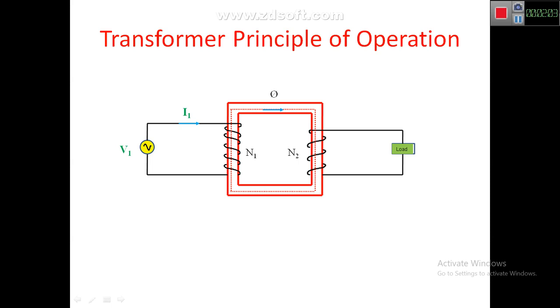That EMF is E1 is equal to minus N1 d phi by dt, where the minus sign indicates, according to Lenz law, the EMF induced E1 is opposing the cause producing it, that is maybe V1 or we can say I1 also.